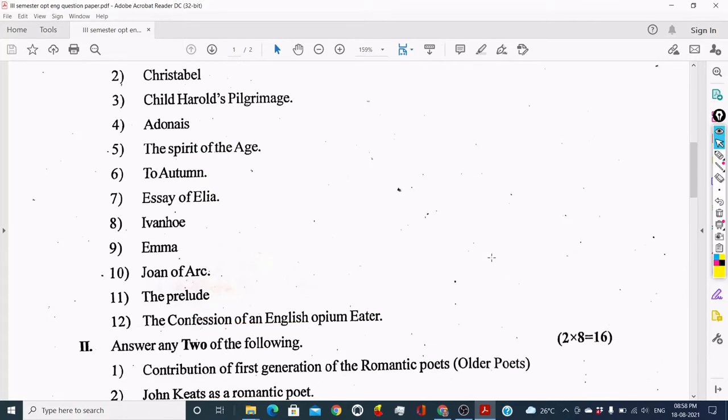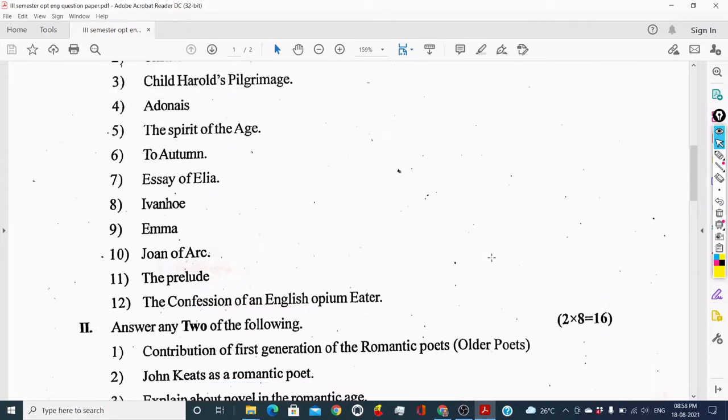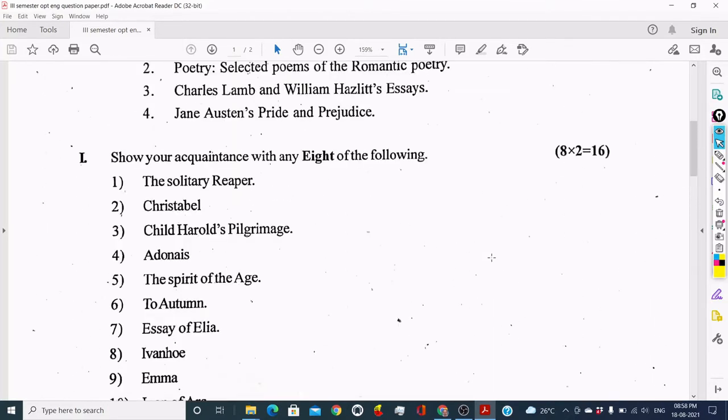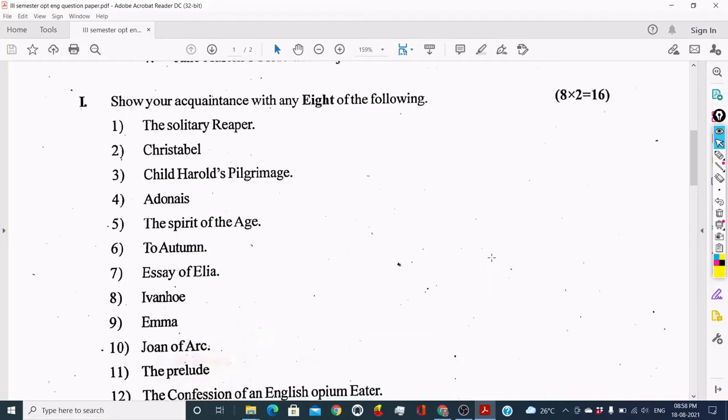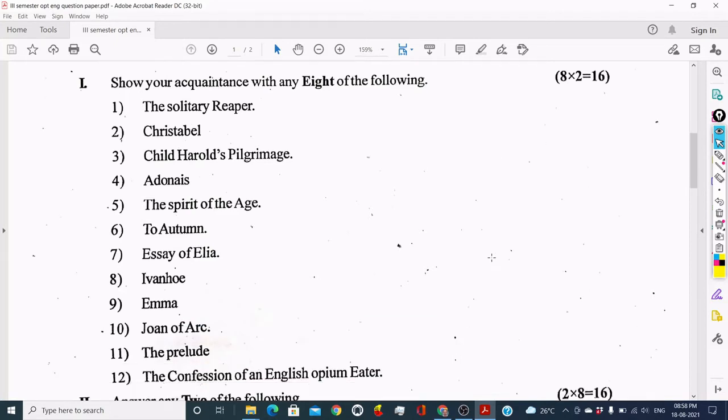First and second main questions are from History of English Literature. The first main question includes 12 questions, each carrying two marks. Out of 12 questions, you have to write only eight questions.